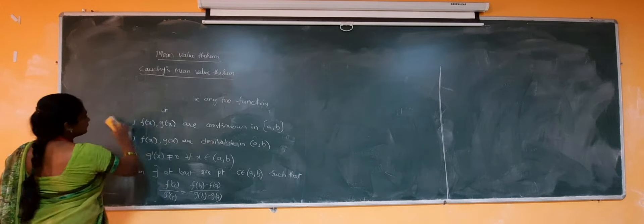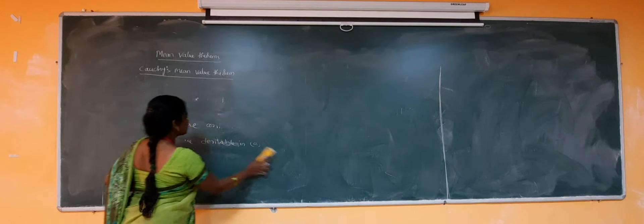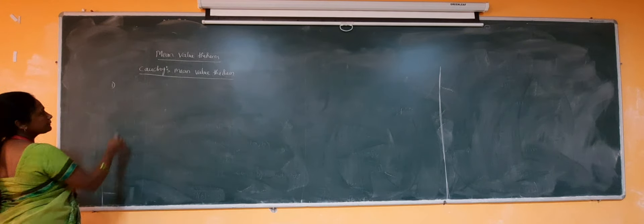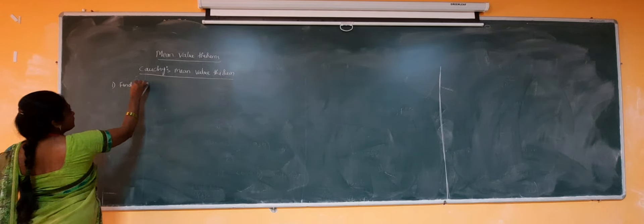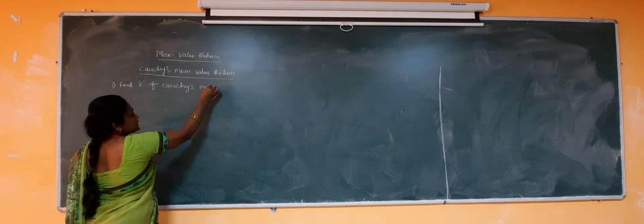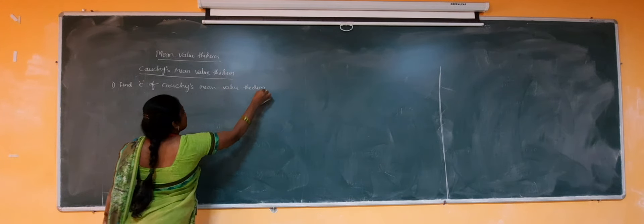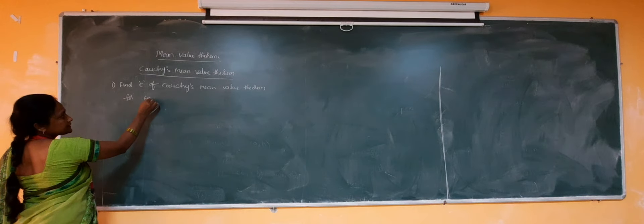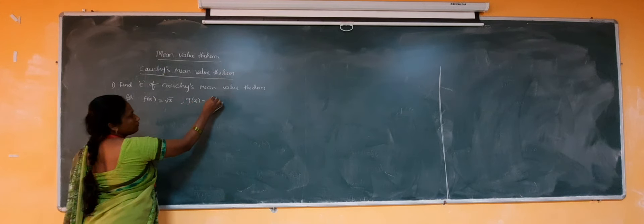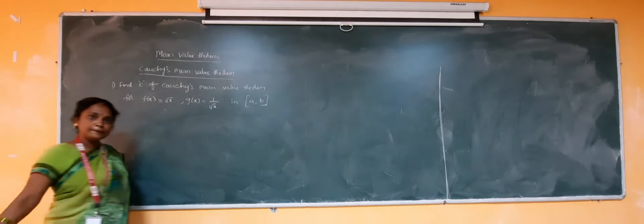Now coming to problems based on Cauchy's mean value theorem. Let us discuss the problems. Number 1: Find c of Cauchy's mean value theorem for the functions f(x) = √x and g(x) = 1/√x on the interval [A, B].